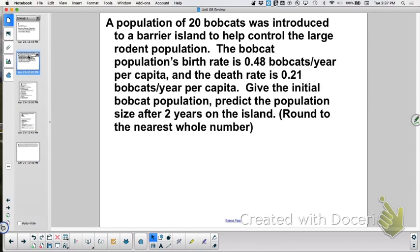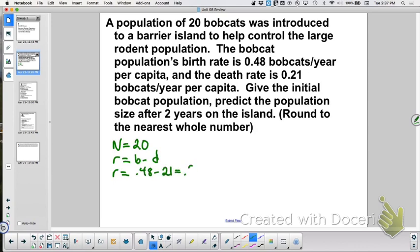Okay, so let's write down what we know. What do we know? B and D. Okay, N equals what? 20. We know R equals B minus D, right? So what R equals, what would be the math there I would do? 0.48 minus 0.21, which equals what? 0.27. Now, 20 bobcats introduced, we know its birth rate, we know its death rate, give the initial bobcat population. So what would be the answer to the initial bobcat population? 20.